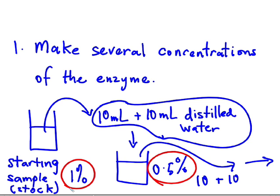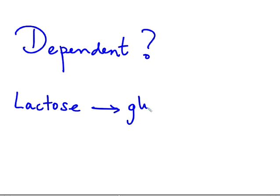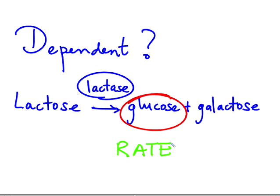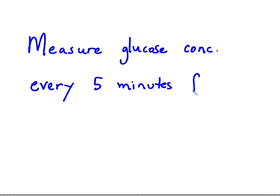Once we have all of our enzyme concentrations made up, we have our independent variable. But what about the dependent variable? How would we quantify the rate at which this enzyme works? Lactose breaks up into glucose and galactose when catalyzed by the enzyme lactase. This hydrolysis produces glucose, which can be used as a measure of the rate of breakdown. By taking glucose concentrations at time intervals, we can quantify which enzyme concentration produces the fastest reaction.